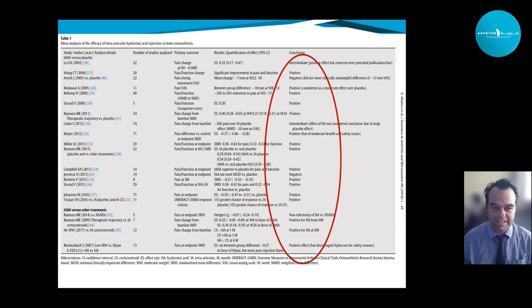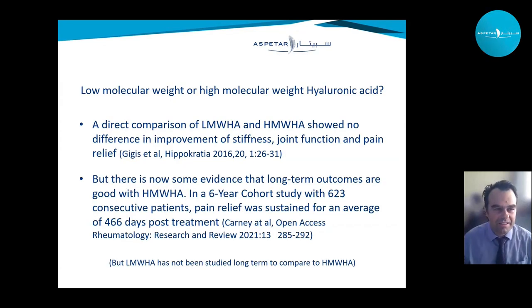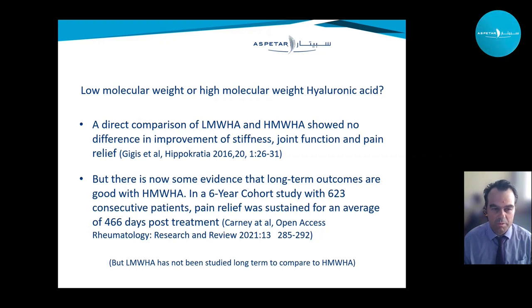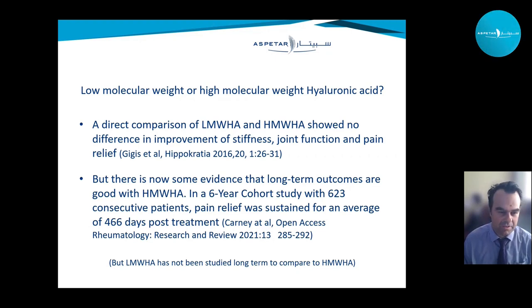A meta-analysis shows quite a lot of preparations of hyaluronic acid with positive effects on osteoarthritic knee symptoms. The question remains which hyaluron is best. A comparative study found no difference between lower and higher molecular weight in joint stiffness, function, and pain relief. However, recent evidence from a six-year cohort study found that one injection of a higher molecular weight hyaluron had sustained effect even 466 days post-injection, which can be prolonged by repeating. I couldn't find any long-term outcome data for low molecular weight hyalurons.